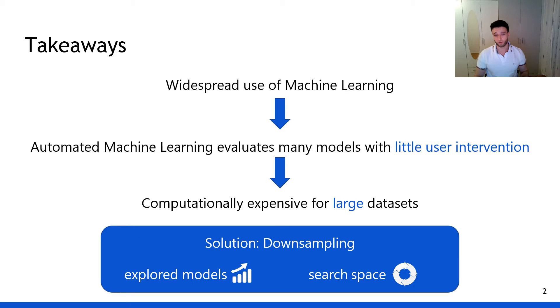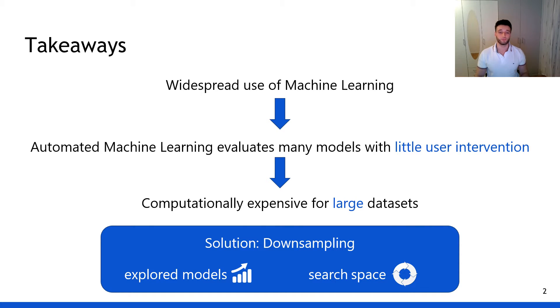As such, we have extensively studied the effect of downsampling — that is, reducing the number of rows in the tabular input datasets. We show that by evaluating substantially more pipelines and exploring a different search space, downsampling can improve pipeline performance.